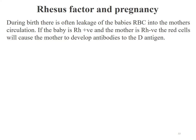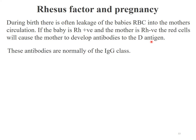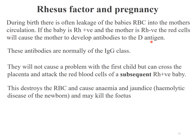Aside from blood transfusion, the rhesus factor is one important consideration during pregnancy. During birth, there is often some leakage of the baby's red blood cells into the mother's circulation. If the baby is RhD positive while the mother is RhD negative, the baby's red blood cells will sensitize the mother and she will develop antibodies against the D antigen. These antibodies are of the IgG class. This will be fine for the first born as it will not cause any trouble, but if the mother is pregnant again with an RhD positive baby, these antibodies will cross the placenta and attack the red blood cells of the newborn or fetus.